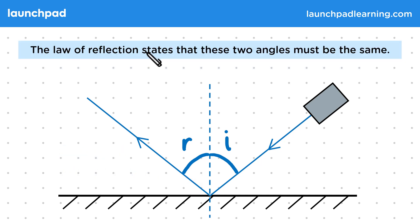Well, the law of reflection states that these two angles must be the same. We can write this as the equation: angle of incidence is equal to the angle of reflection. It's important to remember that we must measure these angles against the normal and not the surface itself.